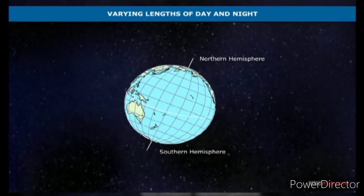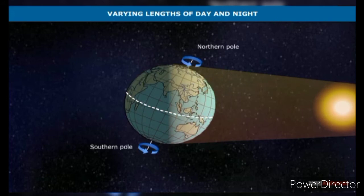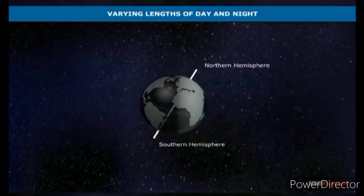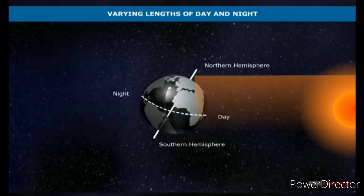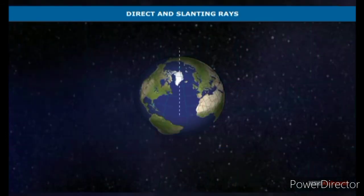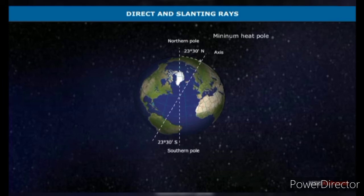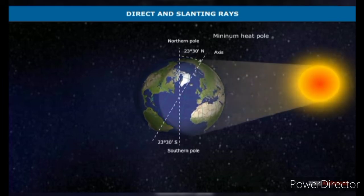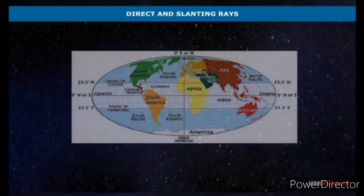The duration of days and nights from the equator to the pole, and from one part of the year to another, can be indicated in terms of days and months of the year. The amount of heat received at the poles is the minimum. It is the spherical shape of the earth and its inclination on its axis which causes the inclination of the sun's rays. The amount of heat received directly depends on the inclination of the sun's rays.